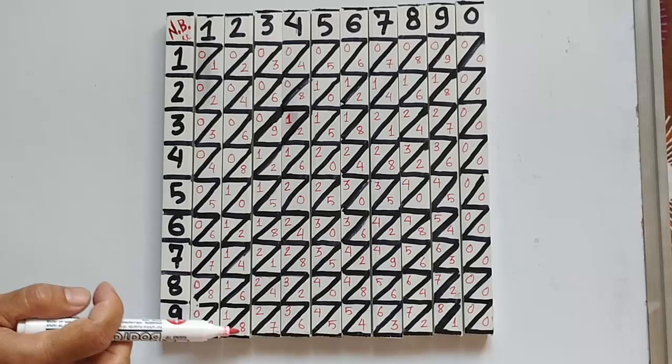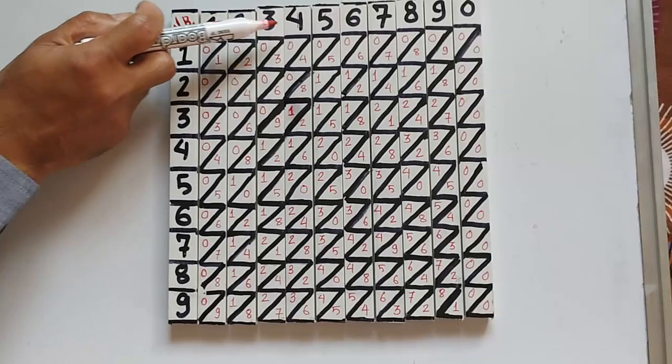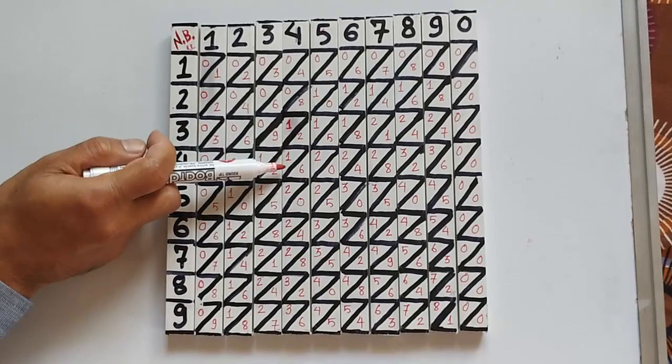For 3: 3, 6, 9, 12 and so on. For 4: 4 times 1 is 4, 4 times 2 is 8, 4 times 3 is 12, 16, 20 and so on.